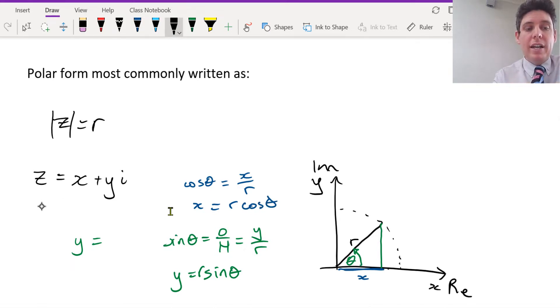So we could rewrite instead of standard form, we could write it as r cos theta plus r sine theta i.